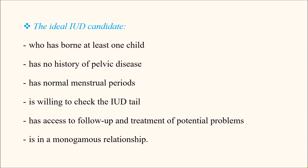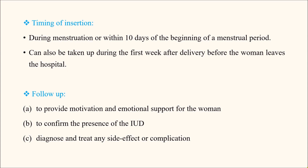The ideal candidate for IUD insertion is a woman who has borne at least one child, has no history of pelvic inflammatory disease, has normal menstrual periods, is motivated and willing to check the IUD tail regularly, has access to follow-up and treatment for potential problems, and is in a monogamous relationship. When a woman fulfills all these criteria, she is an ideal candidate for IUD insertion.